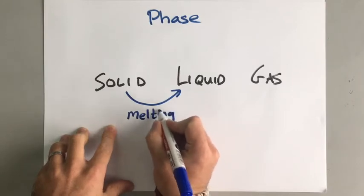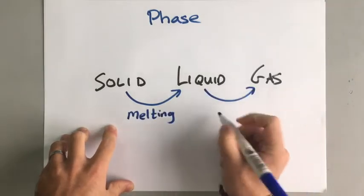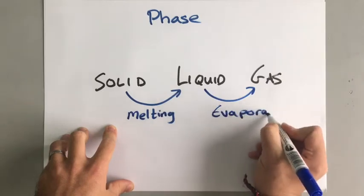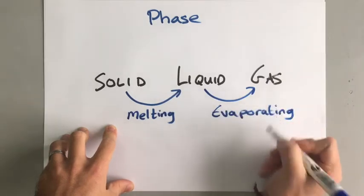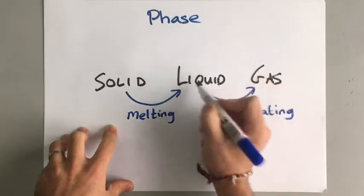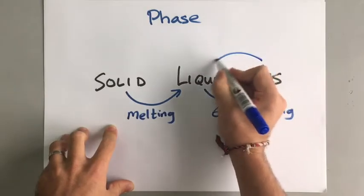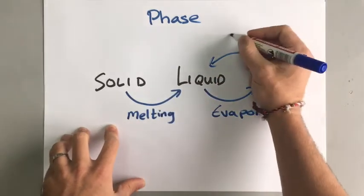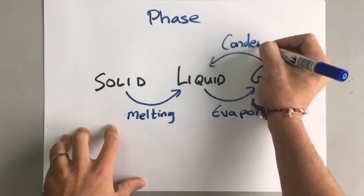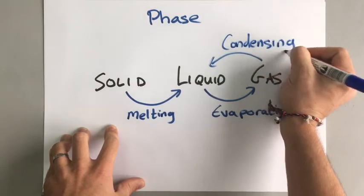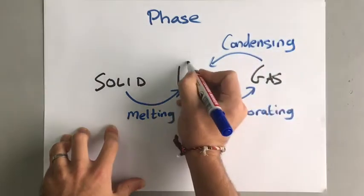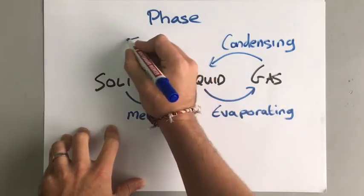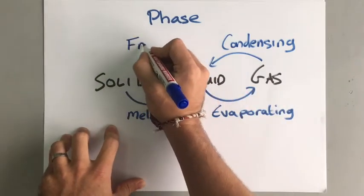A liquid to a gas is called evaporating. When a gas turns back into a liquid — you see that when you breathe on a cold window — that's called condensing. And when a liquid goes into a solid, like when you put water back in the freezer, that's called freezing.